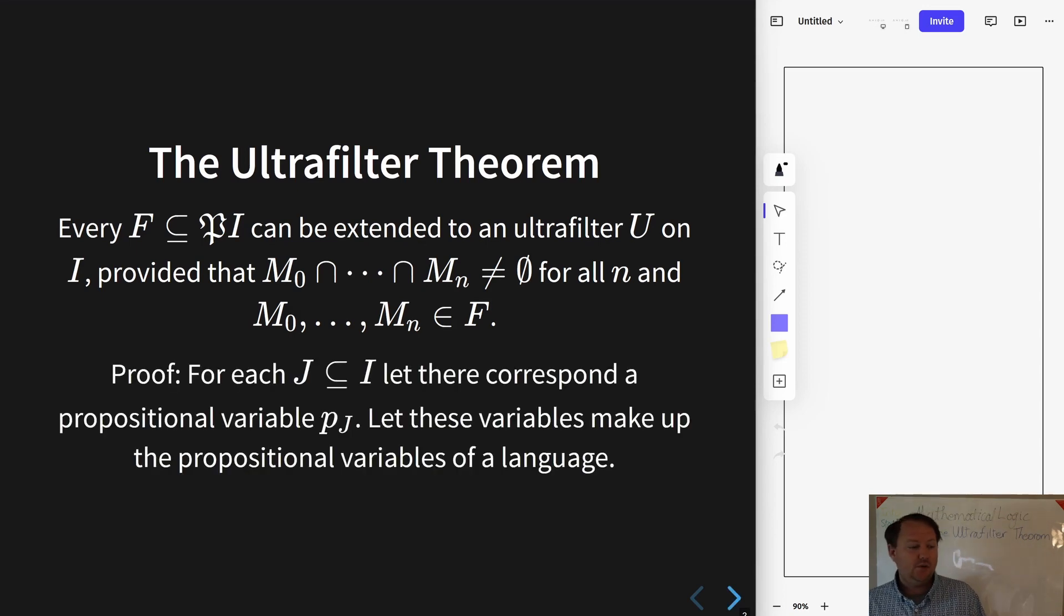Now the proof is going to use the compactness theorem that we proved, and as a lot of these applications of the compactness theorem go, we are going to somehow build a set of formulae that correspond to the object in question. So in particular here, we are going to take every subset of I and have it construct a corresponding propositional variable. In a sense, each variable is going to represent the assertion that the given set is in the filter.